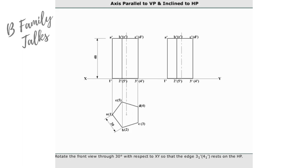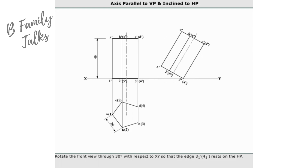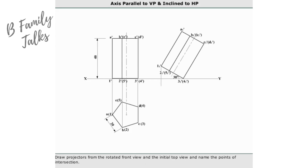Rotate the front view through 30 degrees with respect to XY so that the edges 31-41' rest on the HP. Draw projectors from the rotated front view and the initial top view and name the points of intersection.